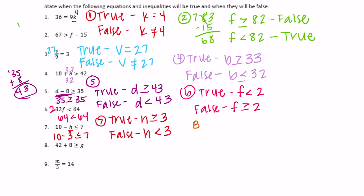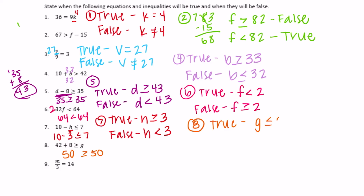Number eight: 42 plus 8 is greater than or equal to g. So 42 plus 8 is 50. This left side is always equal to 50, so it's basically saying 50 is greater than or equal to what. It would be 50 or lower. So for it to be true, g needs to be less than or equal to 50. For it to be false, g would be greater than 50 — for example, if g is 51, then 50 is not greater than or equal to 51.